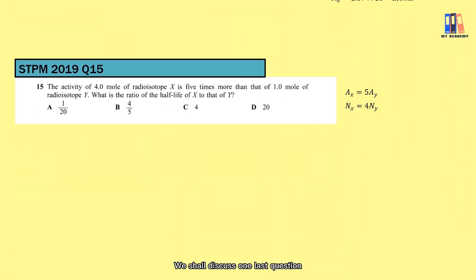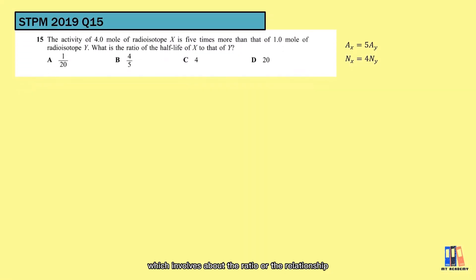We shall discuss one last question which involves the ratio or the relationship between variables. Here we are given with radioisotope X which has 5 times activity higher than Y, and also 4 times more of the number of moles. From the question we came across just now, we can see that the number of nuclei is proportional to the number of moles. So based on the condition of these two isotopes, you can build two equations first.